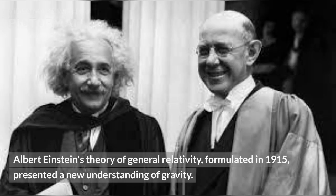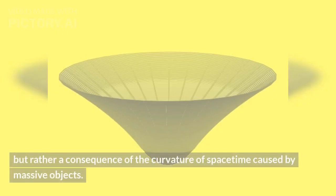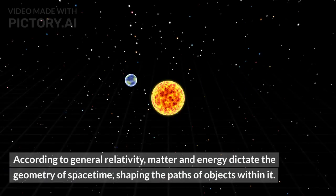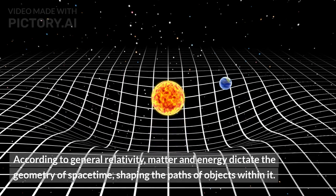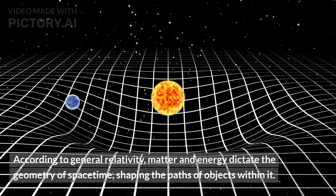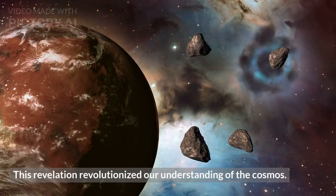Albert Einstein's theory of general relativity, formulated in 1915, presented a new understanding of gravity. It proposes that gravity is not merely a force pulling objects together, but rather a consequence of the curvature of spacetime caused by massive objects. According to general relativity, matter and energy dictate the geometry of spacetime, shaping the paths of objects within it. This revelation revolutionized our understanding of the cosmos.